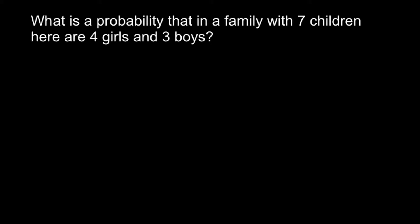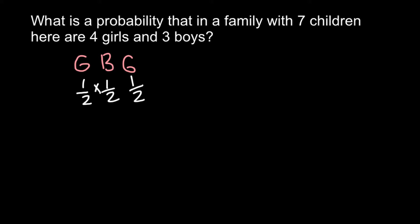Let me briefly remind you: for example, what is the probability that a family would have two girls and one boy, and the order is given as girl, boy, and girl? The answer is: the probability that the first child is a girl is one half, the probability that the second child is a boy is one half, and one half that the third child is a girl. Because these are independent probabilities, we use the product rule and multiply them all. The probability of such an event is one eighth.